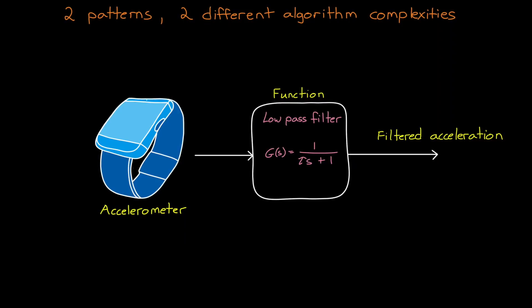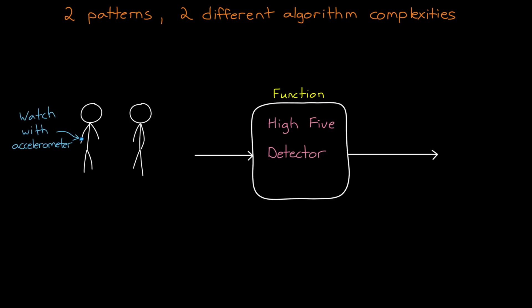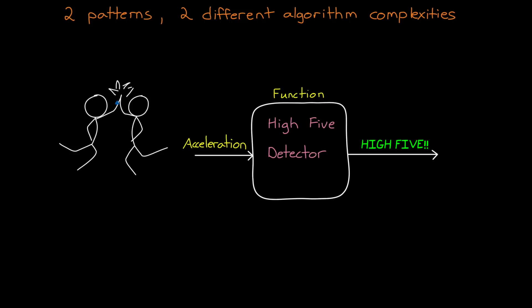But now, let's look at a case where the pattern we're looking for is more abstract. Perhaps we want to use the accelerometer to determine when the user high-fives someone. In this case, the input into our function is still acceleration, the exact same data as before, but the output is a flag that is set when a high-five pattern is detected. The function that does this classification is decidedly more complex than a simple low-pass filter, because the pattern it's looking for is more complex.